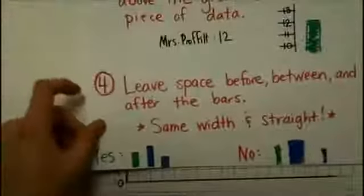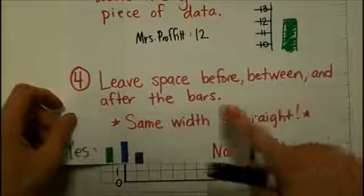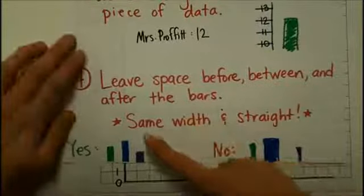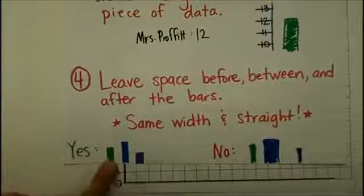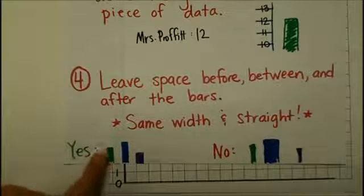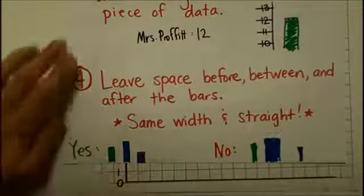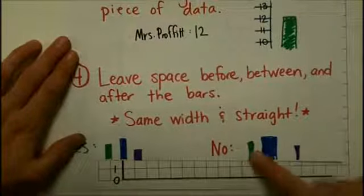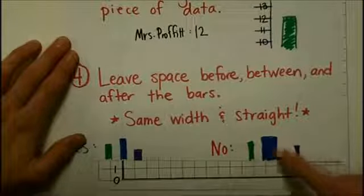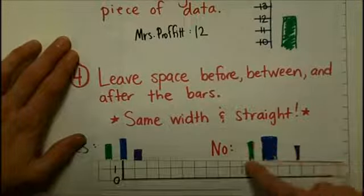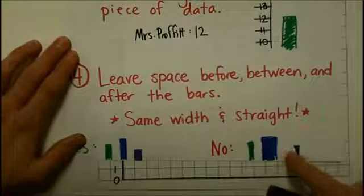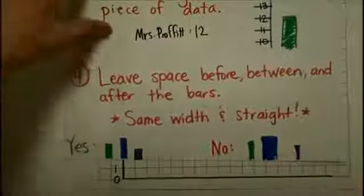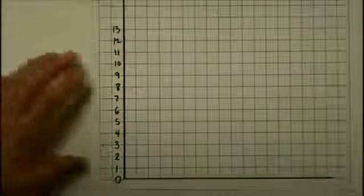Now, I'm going to leave space before, between, and after the bars. And I'm going to make sure that each bar is the same width and it's straight. So, here's a good example. You can see that there's space in between each bars and before them. Here's a poor example. The amount of space in between the bars changes, as well as the width of the bars. See, we have a skinny bar, a really fat bar, an even skinnier bar with big spaces in between.